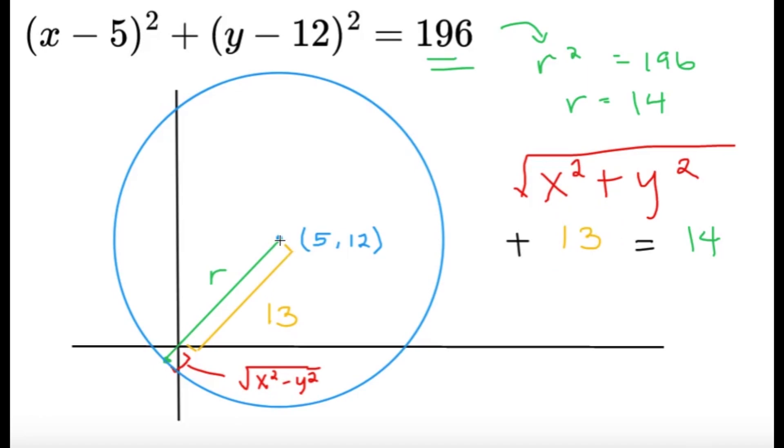Now, why 13? Well, the distance from this blue point, which is the center, to the origin, you can do it via the distance formula. This 13 came from the square root of 5 squared plus 12 squared. Again, 5, 12, 13, a famous Pythagorean triple. And the sum of the square root of x squared plus y squared and 13, that's going to equal to 14, which is the radius, as you can see in this part.